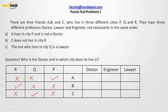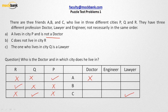The first piece of information also said that A is not a doctor. The third information says the one who lives in city Q is a lawyer. So who is living in city Q? C stays in city Q, and since the resident of Q is a lawyer, C is a lawyer — we give it a tick. Now in the row and in the column of this corresponding cell, the rest of them will be crossed.